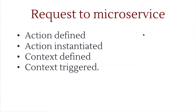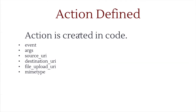When we talk about the request going out, there are four normal stages. First, you define an action — the action is defined in code through a plugin, something a developer has to do. Then the action is instantiated through the front end. Think of the action definition as a class, and the instantiation as an instance of that class. You configure it through the Drupal UI. Then we define a context, and there's an excellent chance that context already exists. Finally, you define the conditions under which that context is triggered.